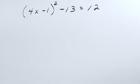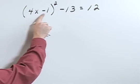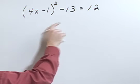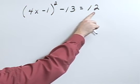Solve the equation. The quantity 4x minus 1 squared minus 13 equals 12.